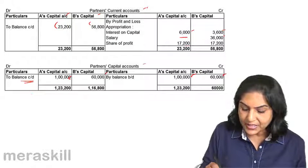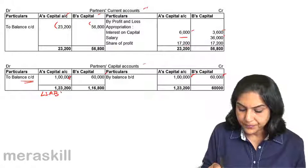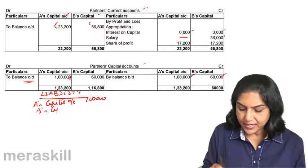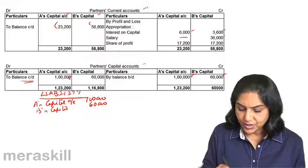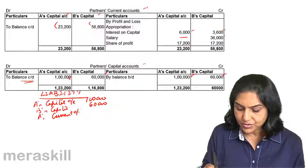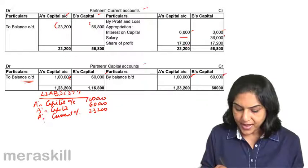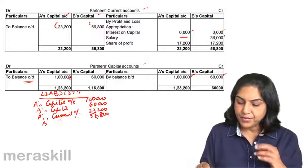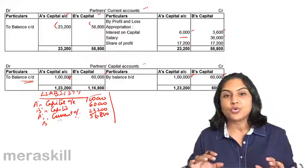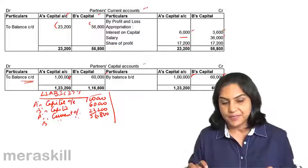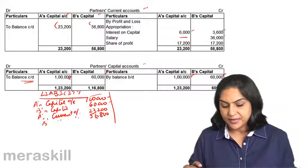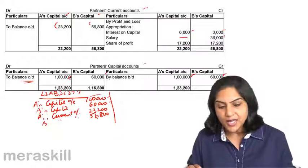So in the balance sheet, on the liability side, you would have A's capital account of 1 lakh, B's capital account of 60,000, A's current account of 23,200, and B's current account of 56,800. This is actually the total of the capitals of the partners. However, capital is kept fixed at 1,60,000, and all other fluctuations are routed through another account called the partner's current account.